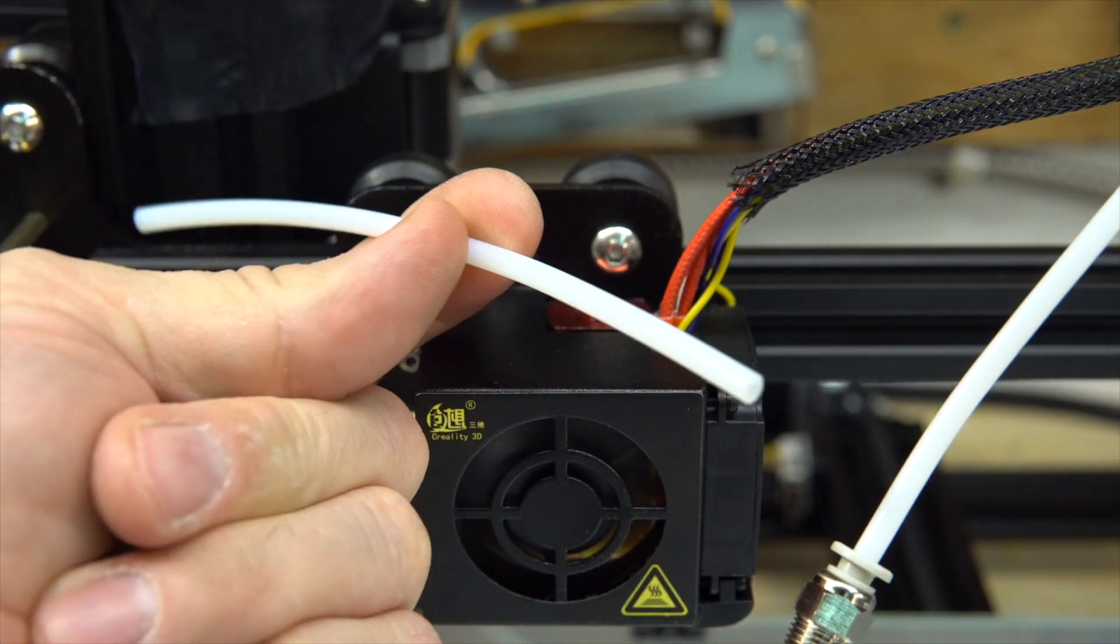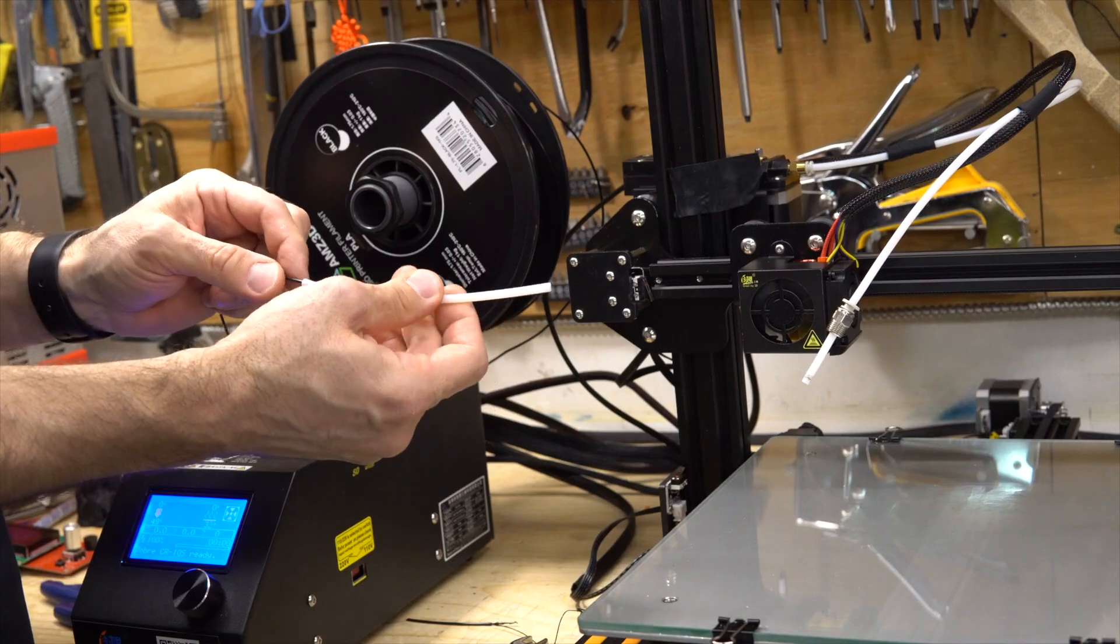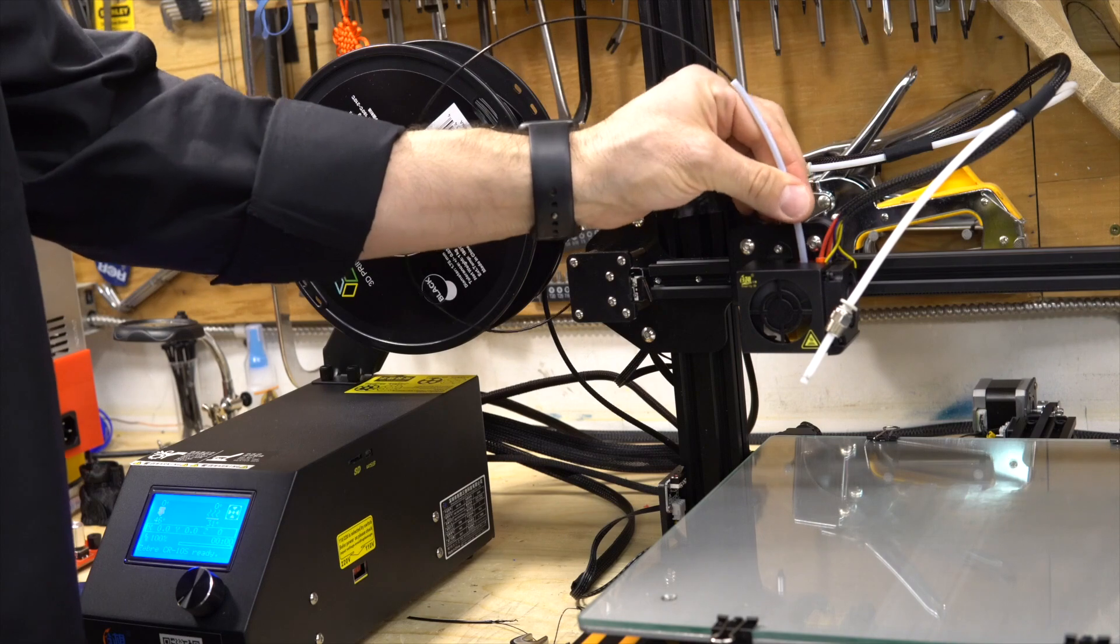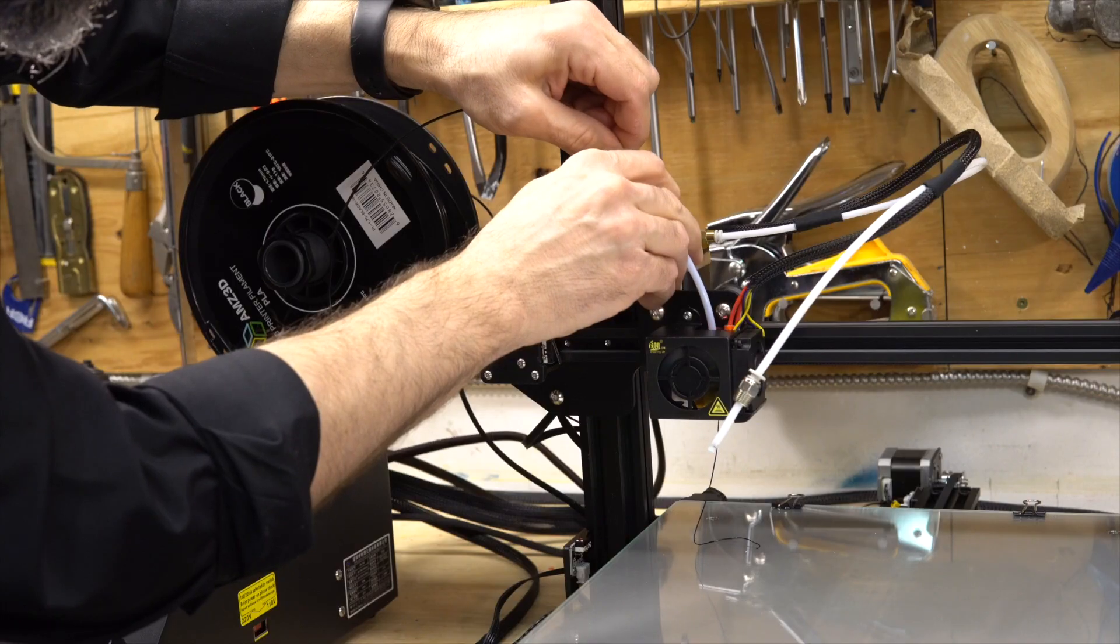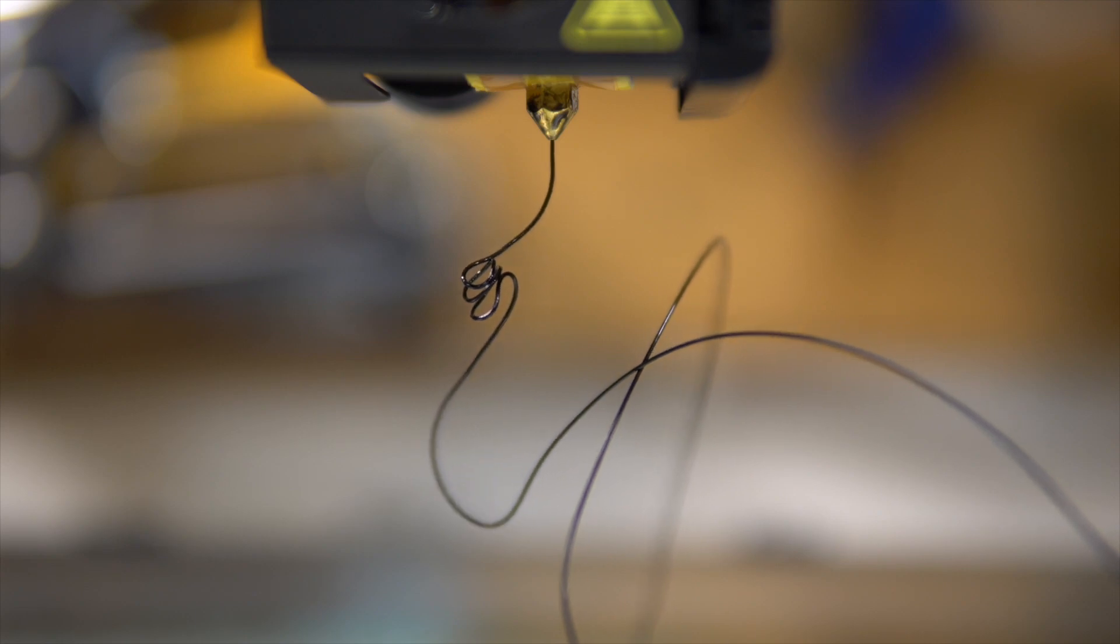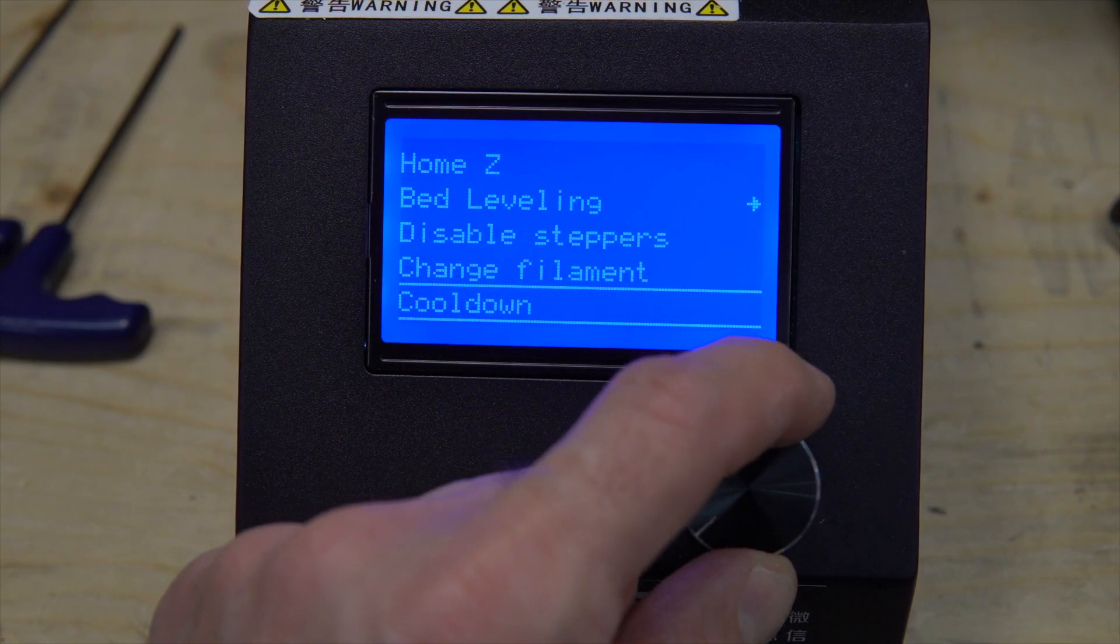Take a small piece of tube, insert your filament inside it and put this in the place of the original tube. Extrude some filament pushing on it, then cool down the printer and wait.